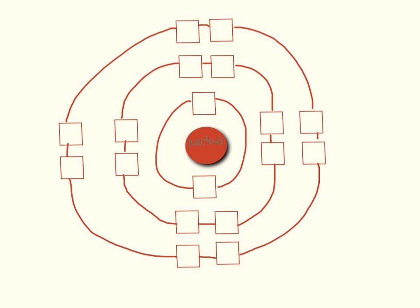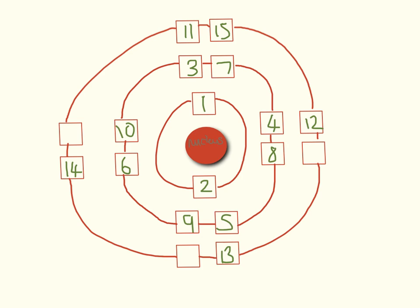I've put here little boxes to show where we can put the electrons. Once you've worked out the number of electrons you want to draw, you put them in in this arrangement. We have two on the first shell, then we slowly fill up the second shell. Electrons like to be in pairs, so I always draw them going around like this — filling up to 18 electrons total: two in the first shell, eight in the second, and eight in the third.